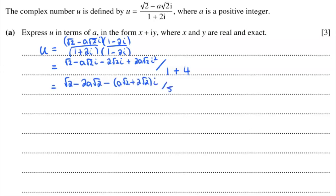And that's all divided by 5. So we divide 5 into each part and we will have root 2 minus 2a root 2 divided by 5, and then we're going to have minus a root 2 plus 2 root 2 divided by 5 times i. And we have it in the form of x plus iy, where x and y are real and exact.